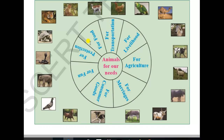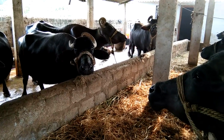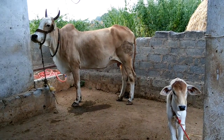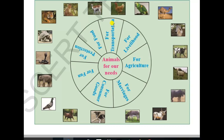Which types of animals are used for food? For food, we use cows, buffalo, fish, sheep, goat, and hens. For transportation, we use camel, bulls for bullock carts, donkey, and also horse.